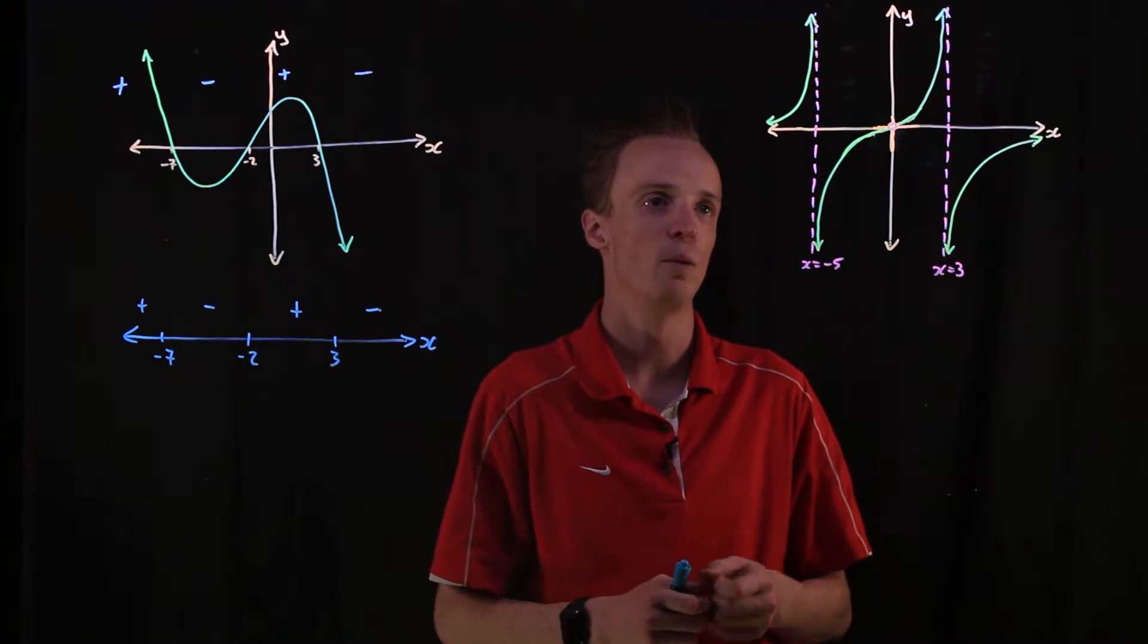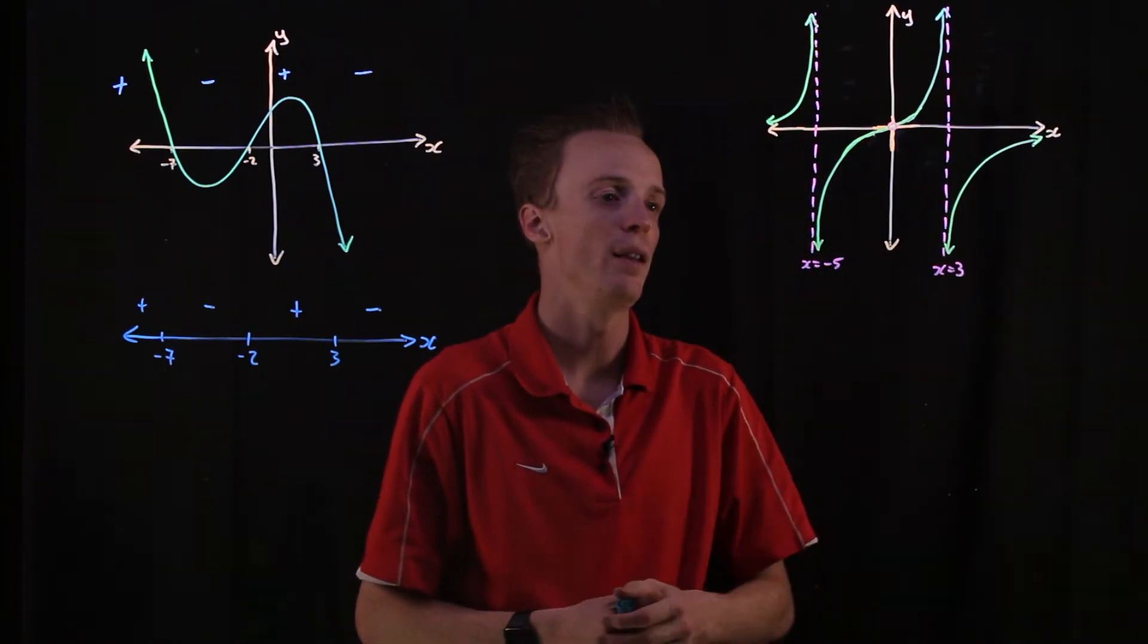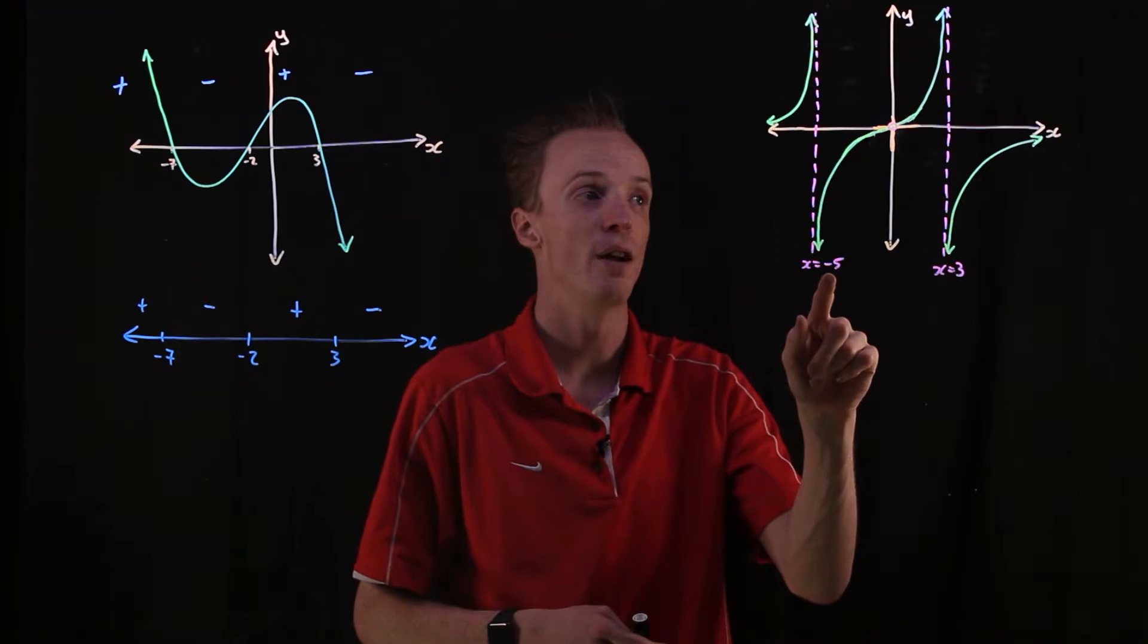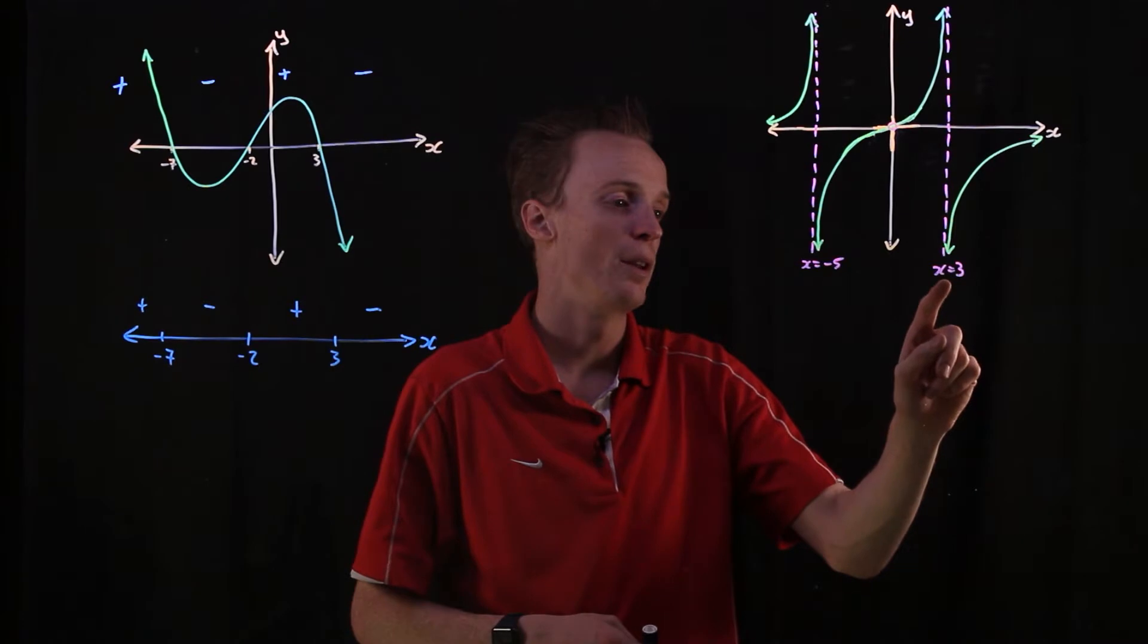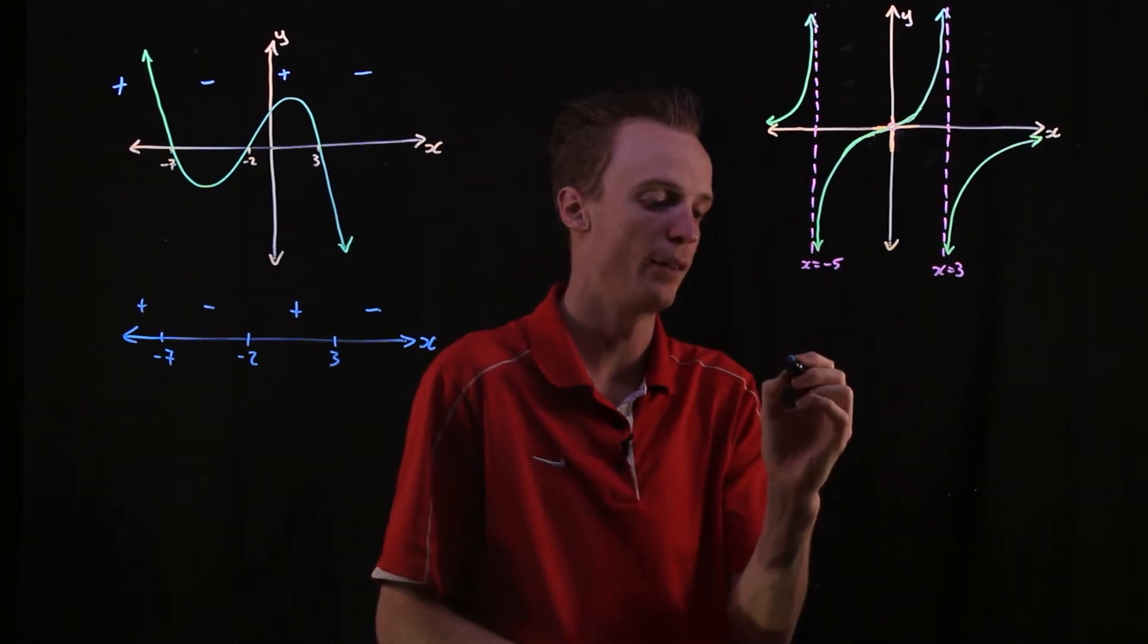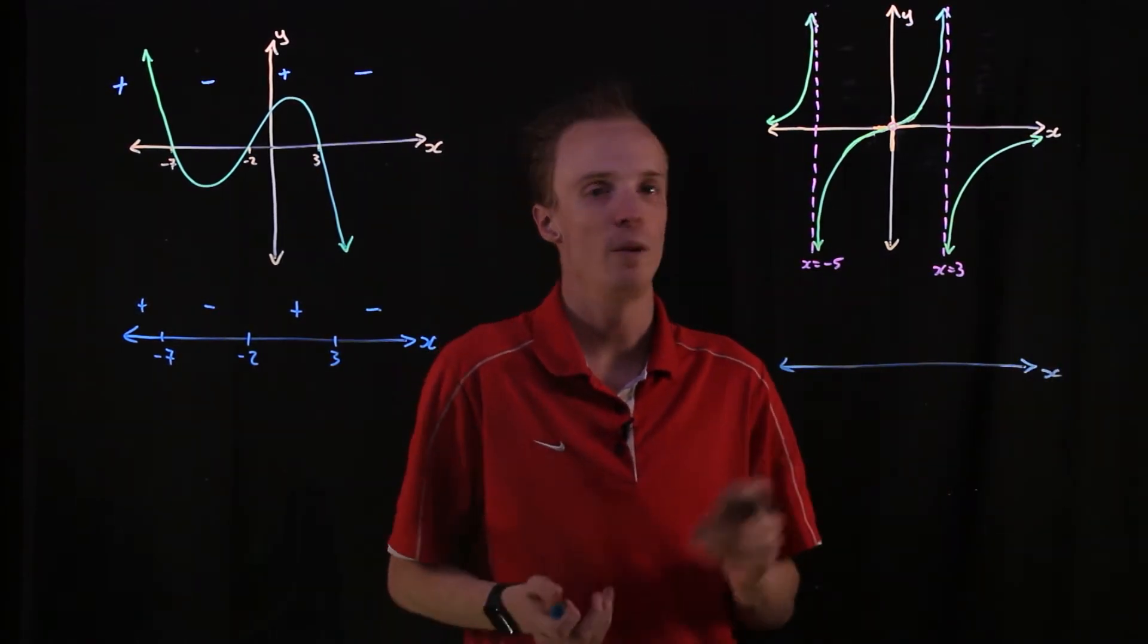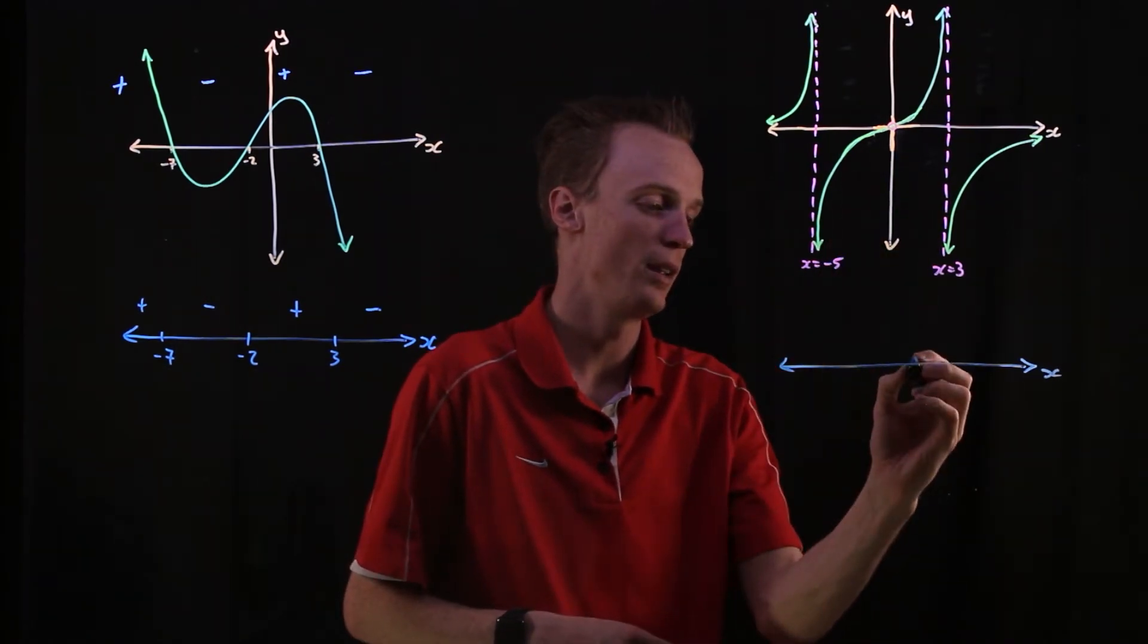So let's take a look at what happens when we've got these asymptotes involved. Well this graph here, the important information on our x-axis is this asymptote at x is negative 5, the intersect at the origin, and the asymptote when x is equal to 3. So let's start by just drawing our x-axis in without the important information down at this stage. Now we already know how to put an intercept in, so let's put the intercept of 0 in the middle here.